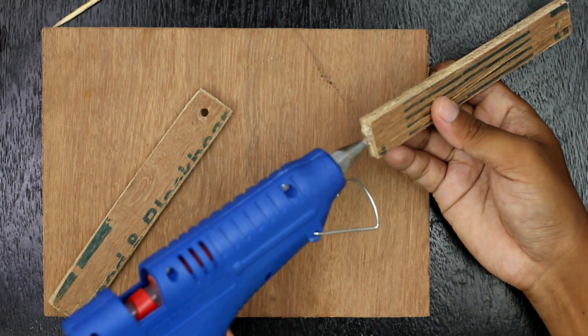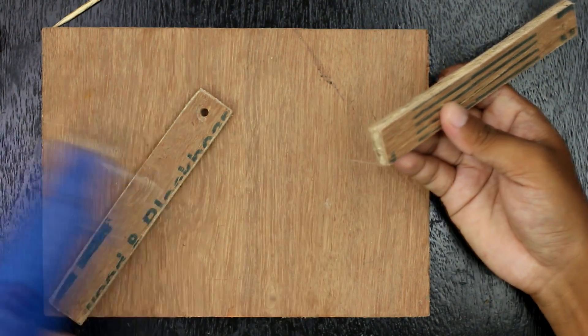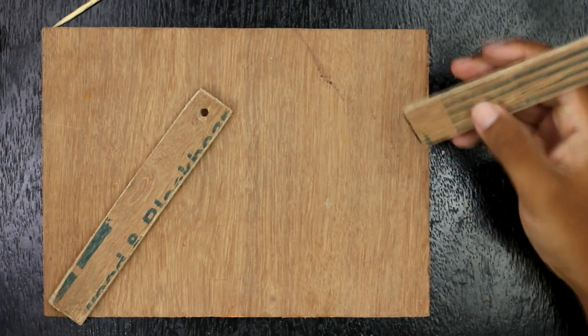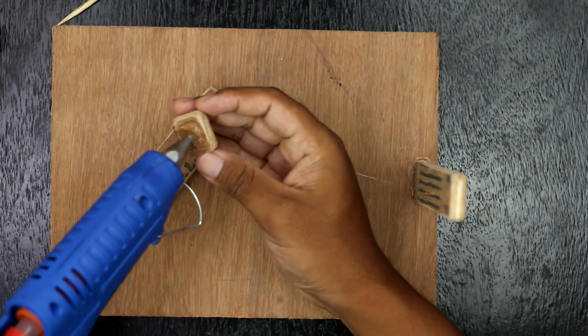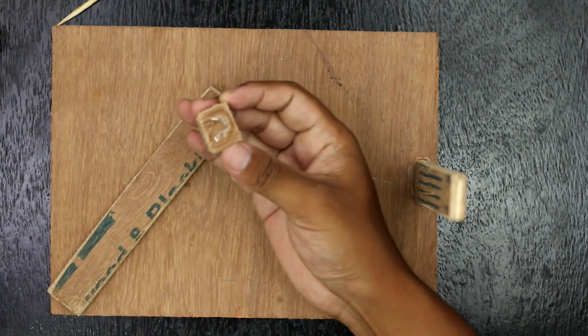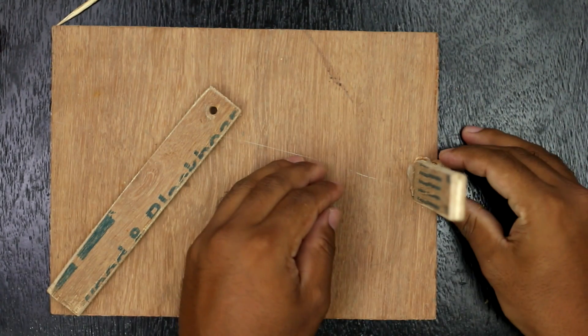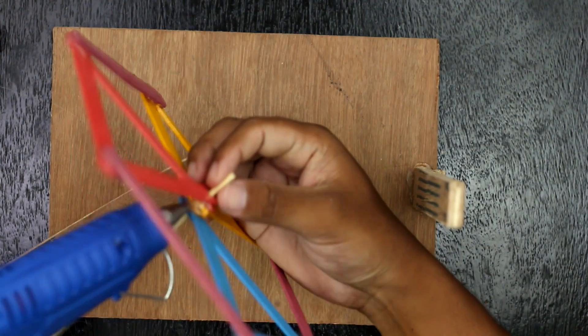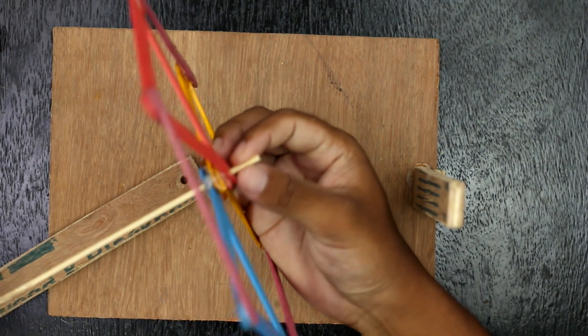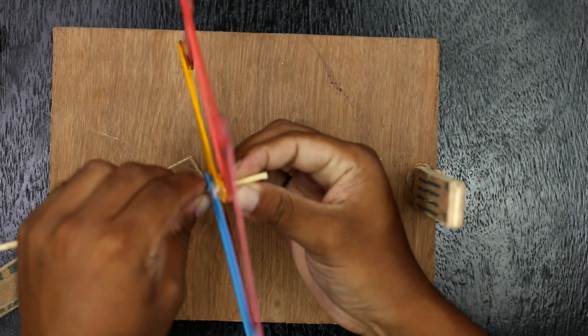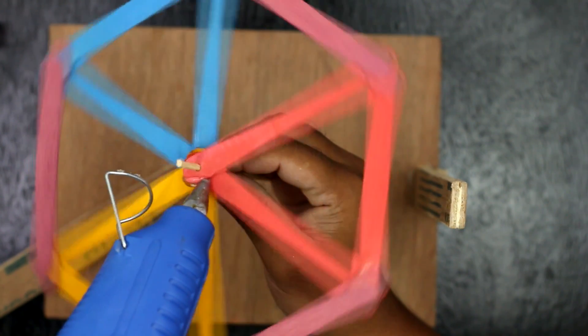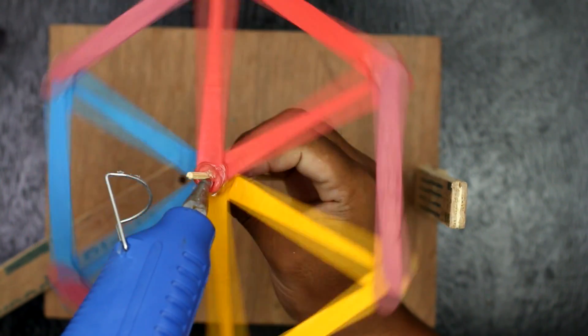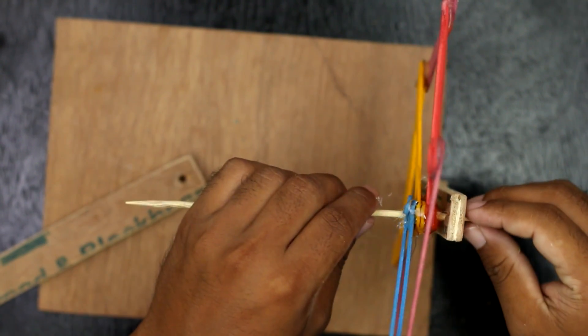I have used plywood for base and stand as it is strong and easy to work with. Now glue both stand and all the baskets. For this I have used hot melting glue.